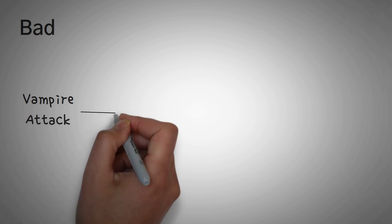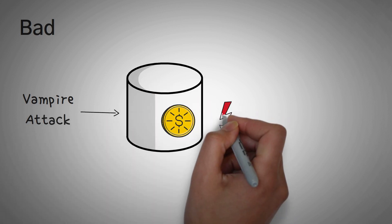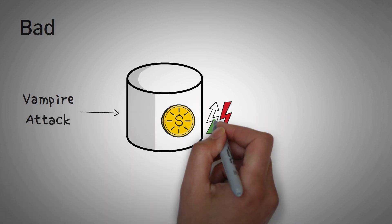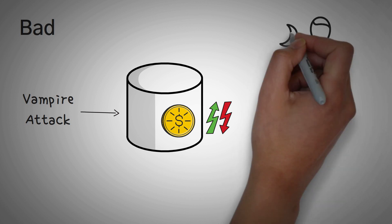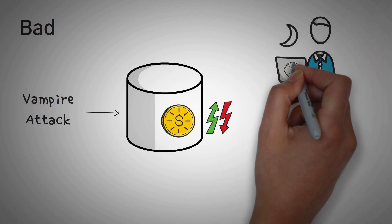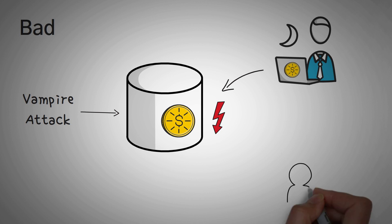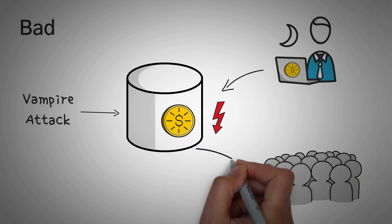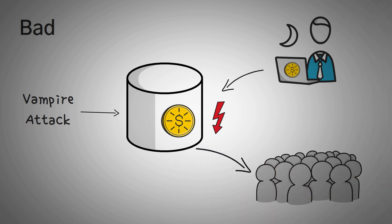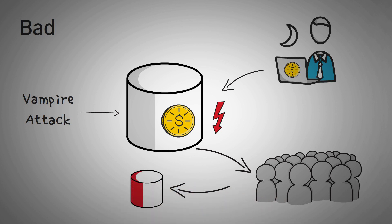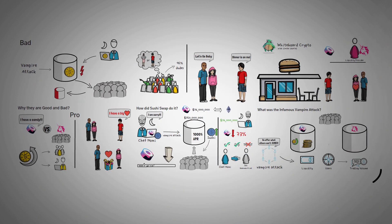However, a bad characteristic of a vampire attack is that tokens minted by the platform are unpredictable. We don't know if someone who farmed a bunch of tokens might decide to just dump them into the market, which would greatly crash the price. In other words, a vampire attack could be malicious — getting investors to take their money from a truly beneficial protocol and deposit it into a risky, fraudulent protocol simply by offering higher rewards.